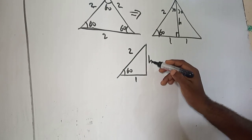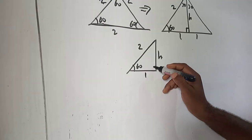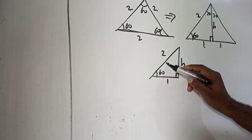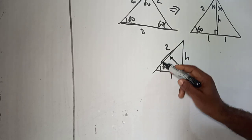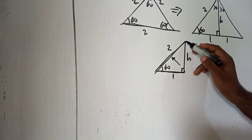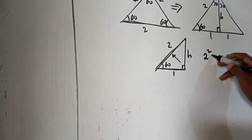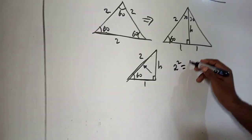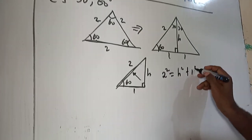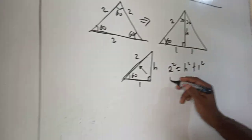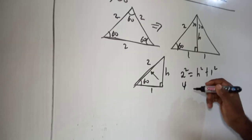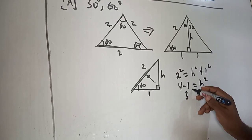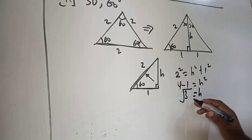Now, to get the value for H, we use what is called Pythagoras theorem. According to Pythagoras theorem, the square of the hypotenuse — which is the longest side of a right angle triangle — equals the sum of the squares of the other two sides. So, 2 squared gives us 4. Taking 1 squared to the other side, 4 minus 1 equals H squared, which is 3. So H will be the square root of 3.